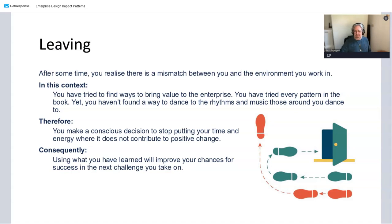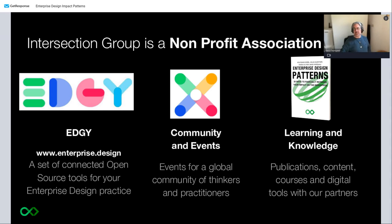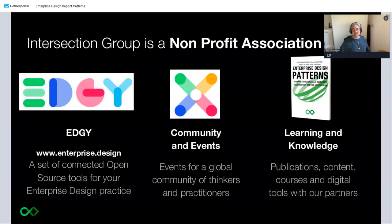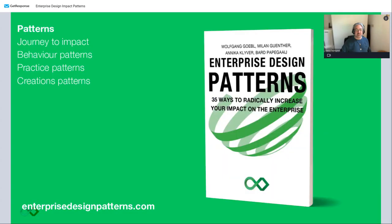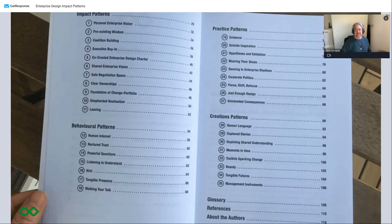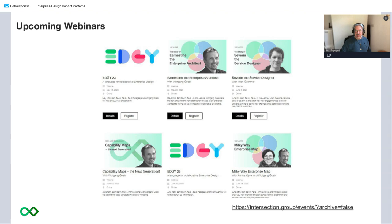This was part of the Intersection Group's initiatives. We are a non-profit association. We have things like EDGY, which is our tool in development — a language I can highly recommend. We have a thriving community, we organize events, and from time to time we write a book. The pattern book is the first one and it's what this webinar was based on. If you want to know what else we organize in terms of webinars, you can go to the intersection.group events page and find all the webinars listed.